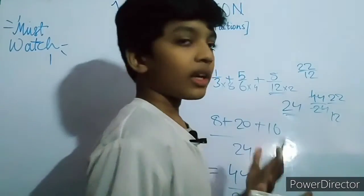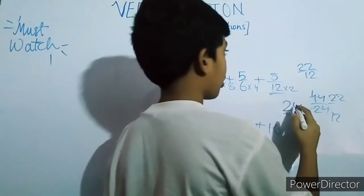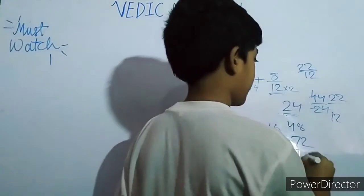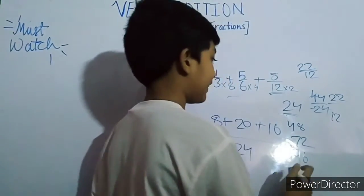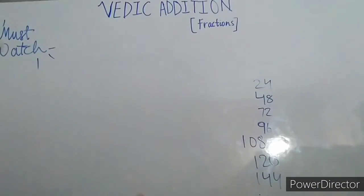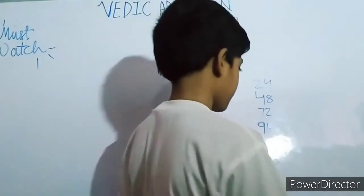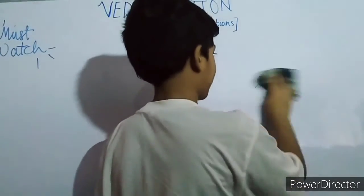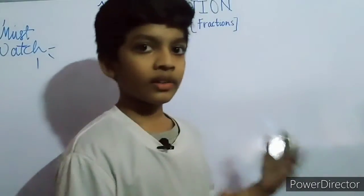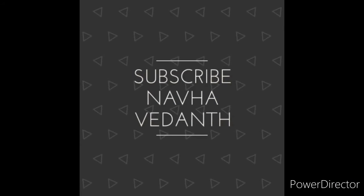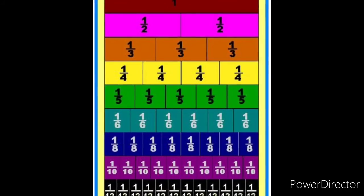Just practice as I said, you can learn this very easily. Common multiples of this include forty eight, seventy two, ninety six, one hundred eight, one hundred twenty, one hundred forty four, and one hundred fifty six. After this I will also make videos on fraction subtraction, multiplication, and division. That's it for this video — bye bye.